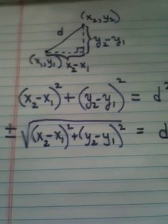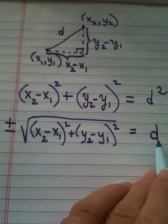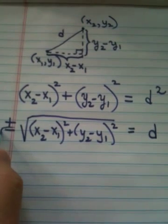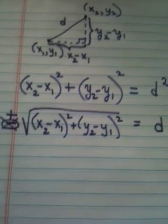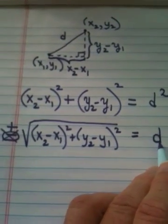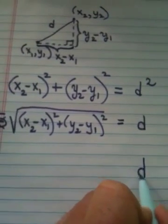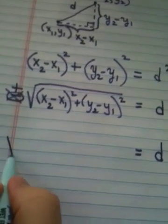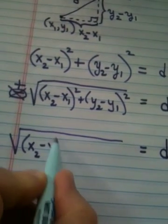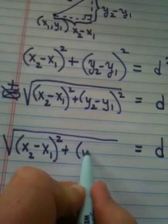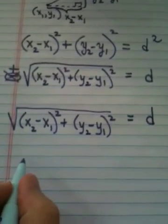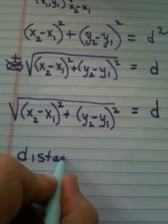Now remember what d is supposed to measure. d is measuring distance. Well, distance cannot be negative, so we have to reject the negative answer. Even though there are correctly two answers for this equation, since d represents distance, we throw out the negative, and that leaves me with d equals the square root of x sub 2 minus x sub 1 quantity squared plus y sub 2 minus y sub 1 quantity squared. And that, my friends, is called the distance formula.